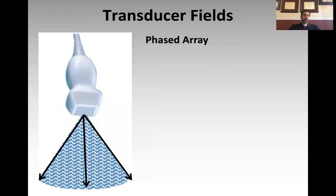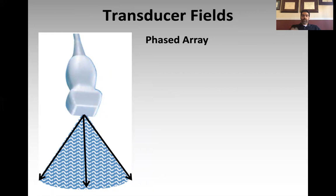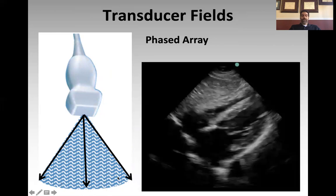The workhorse probe of critical care, and I think the most unique probe in your armamentarium, is the phased array probe. The phased array probe is special because instead of having crystals grouped in a linear fashion along the nose, the crystals are grouped tightly together at the center of the probe. Not only do the crystals vibrate and shoot out sound, but the entire array oscillates back and forth. So the crystals vibrate and the array itself oscillates back and forth, creating a field that is very narrow at its origin.